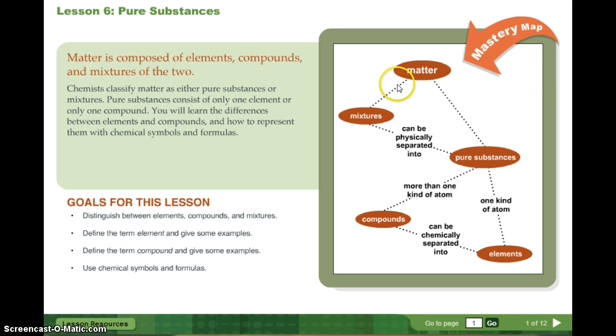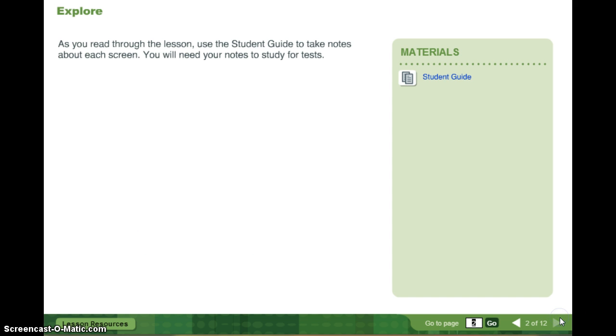So matter can either be mixtures or pure substances. Mixtures can be physically separated into pure substances. If the pure substance has one kind of atom, it's an element. And where do we find all the elements? On the periodic table. If a pure substance has more than one type of atom, then it's a compound. Can you think of an example of a compound? H2O, or water, would be a compound. So H2O, H for hydrogen, O for oxygen, chemically bonded together, it's a compound, and it can be separated into the elements oxygen and hydrogen.